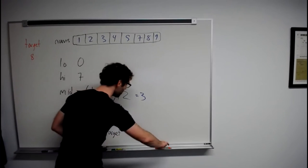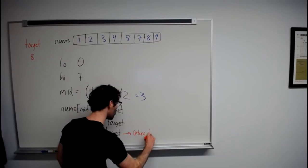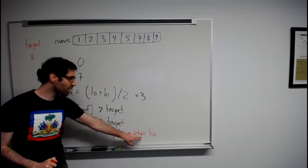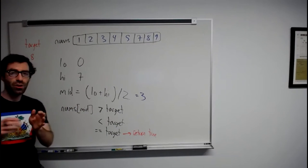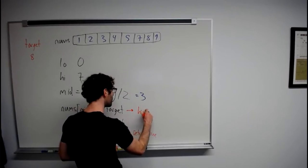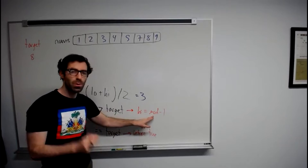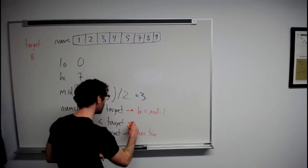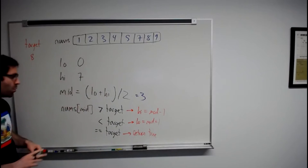We then ask: is nums[mid] greater than target, less than target, or equal to target? If equal, we return true - we found it. When nums[mid] is greater than target, the thing in the middle of our sorted list is bigger than what we're looking for, so we set high equal to mid minus one, considering the lower half. When the target is greater than nums[mid], we want to consider the upper half, so we move low up to mid plus one.